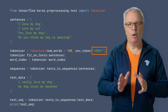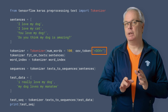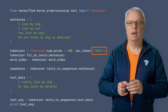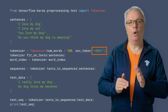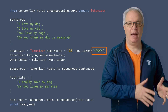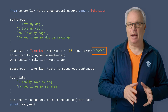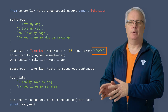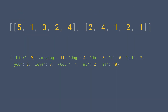By using the OOV token property and setting it to something that you would not expect to see in the corpus, like angle bracket OOV angle bracket, the tokenizer will create a token for that, and then replace words that it does not recognize with the out-of-vocabulary token instead. It's simple but effective, as you can see here. Now the earlier sentences are encoded like this. We've still lost some meaning, but a lot less, and the sentences are at least the correct length. That's a handy little trick.